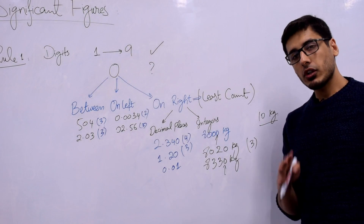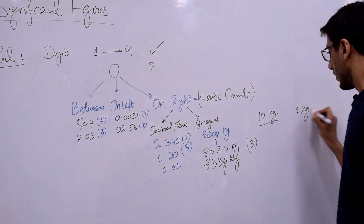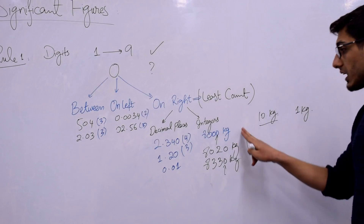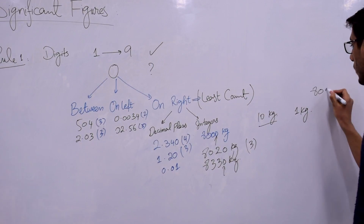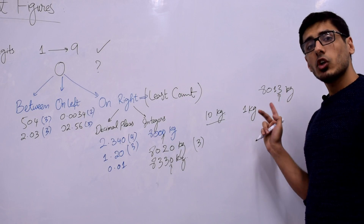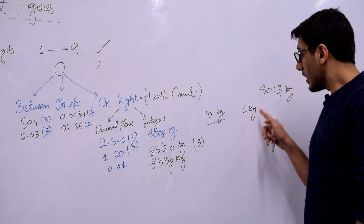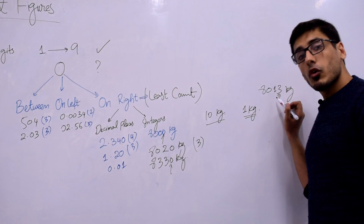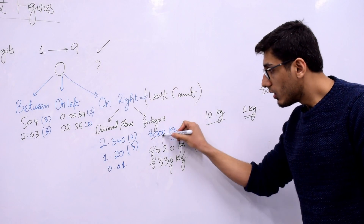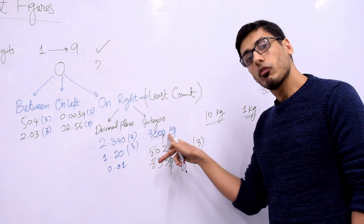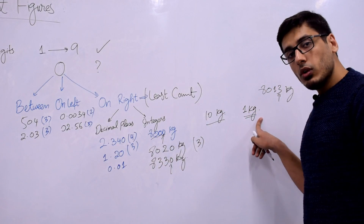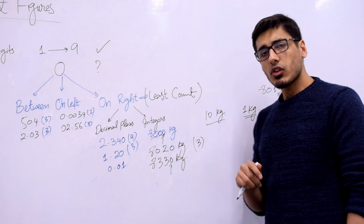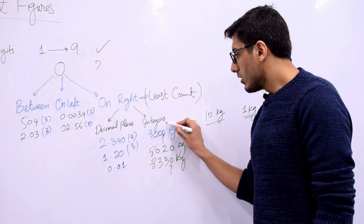But if the least count of your device is 1 kg, it means you can measure masses to the level of 1, 2, 3 kg. In that case, you might see a reading like 8,013 kg — the last digit is not always zero, it actually changes. So with a least count of 1 kg, the number of significant figures is 4, and even if you have 8,000 kg, that trailing zero counts because your device is able to measure that digit.